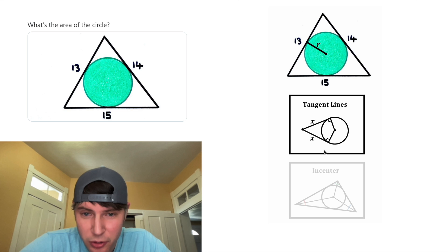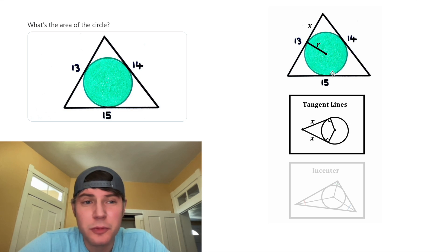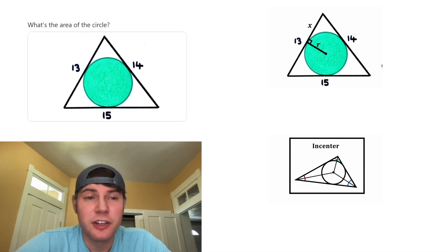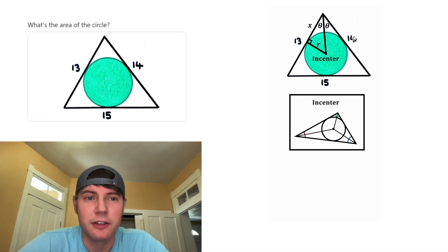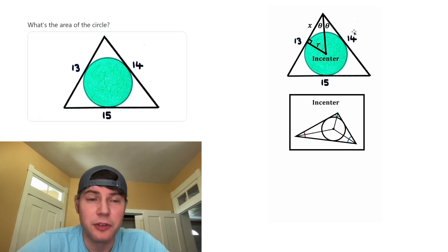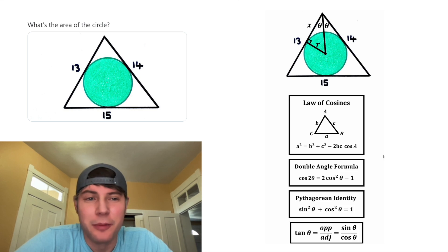This length right here corresponds with the X in our notes, so let's call that X. From the notes, we know that R and X will meet at right angles. Now let's look at the in-center notes. If we draw a segment from the in-center to this vertex, we know it's going to cut this angle in half. We can call each of these angles theta because we know they're both equal to each other. To finish, we're going to use trigonometry notes.